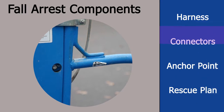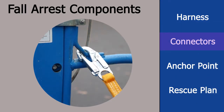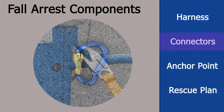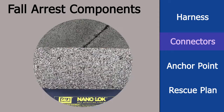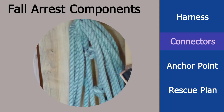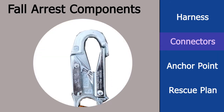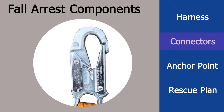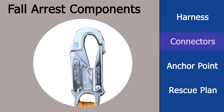A connector is a device used to connect the parts of the fall arrest system. Carabiners, snap hooks, lanyards, deceleration devices, and lifelines are all examples of connectors. Connectors must be corrosion resistant, be made of steel, and have smooth surfaces and edges to prevent damaging components or injuring employees.